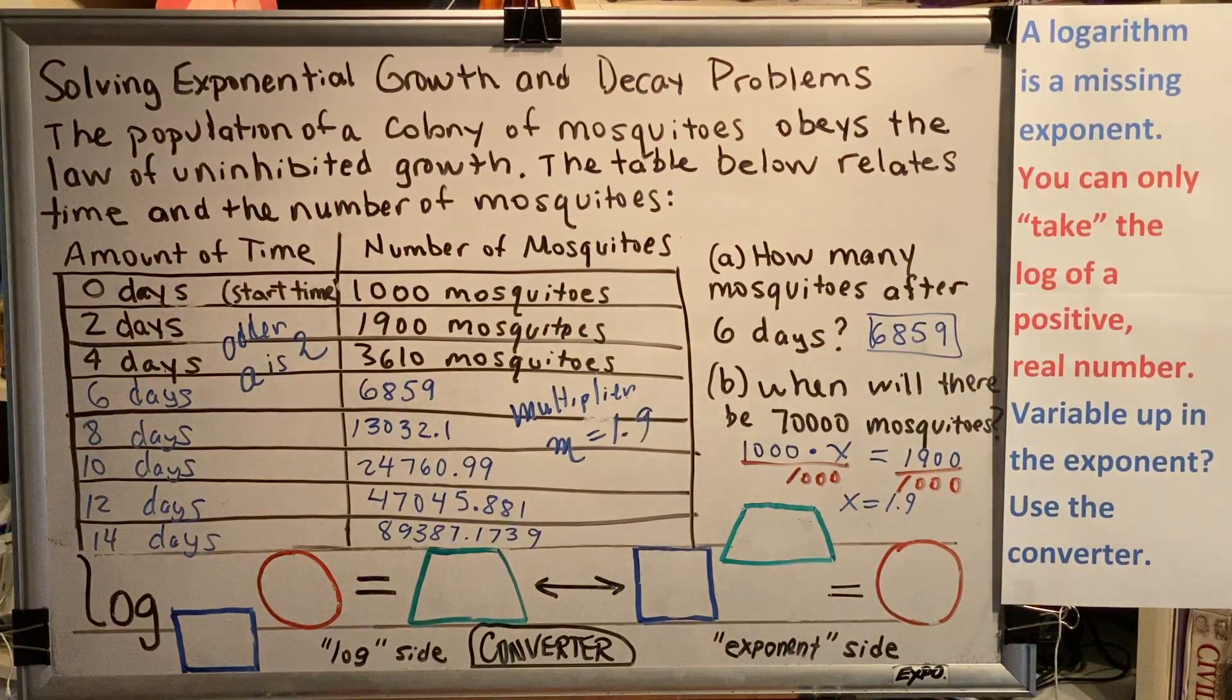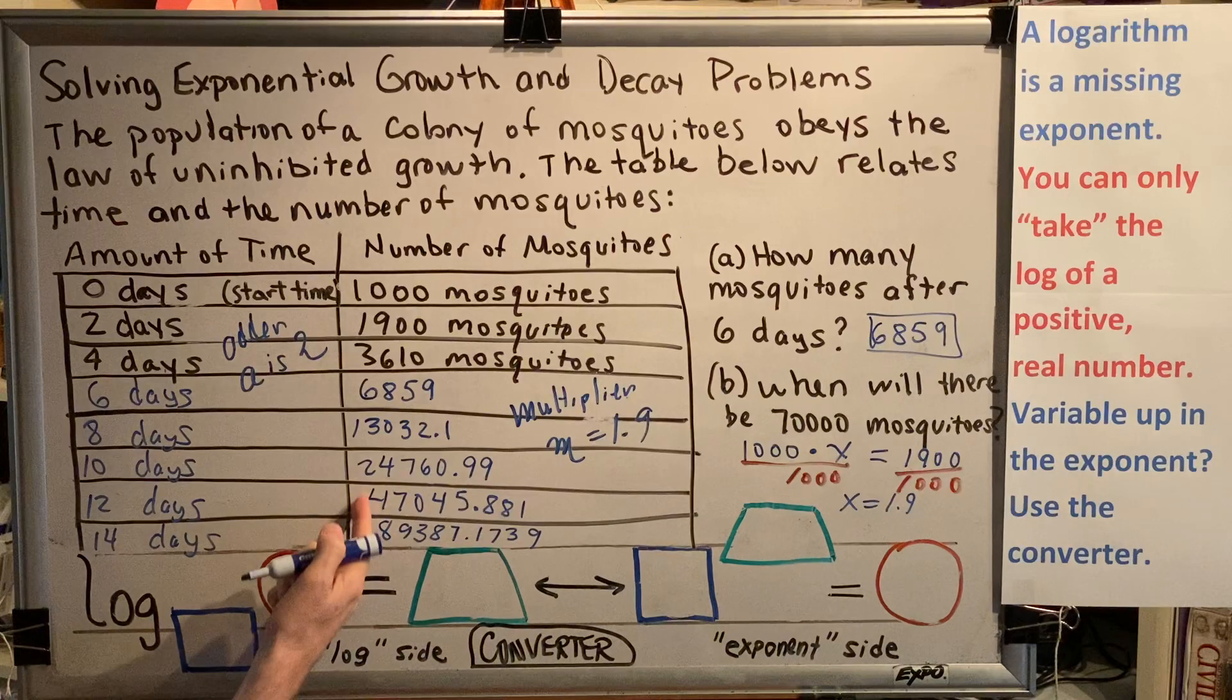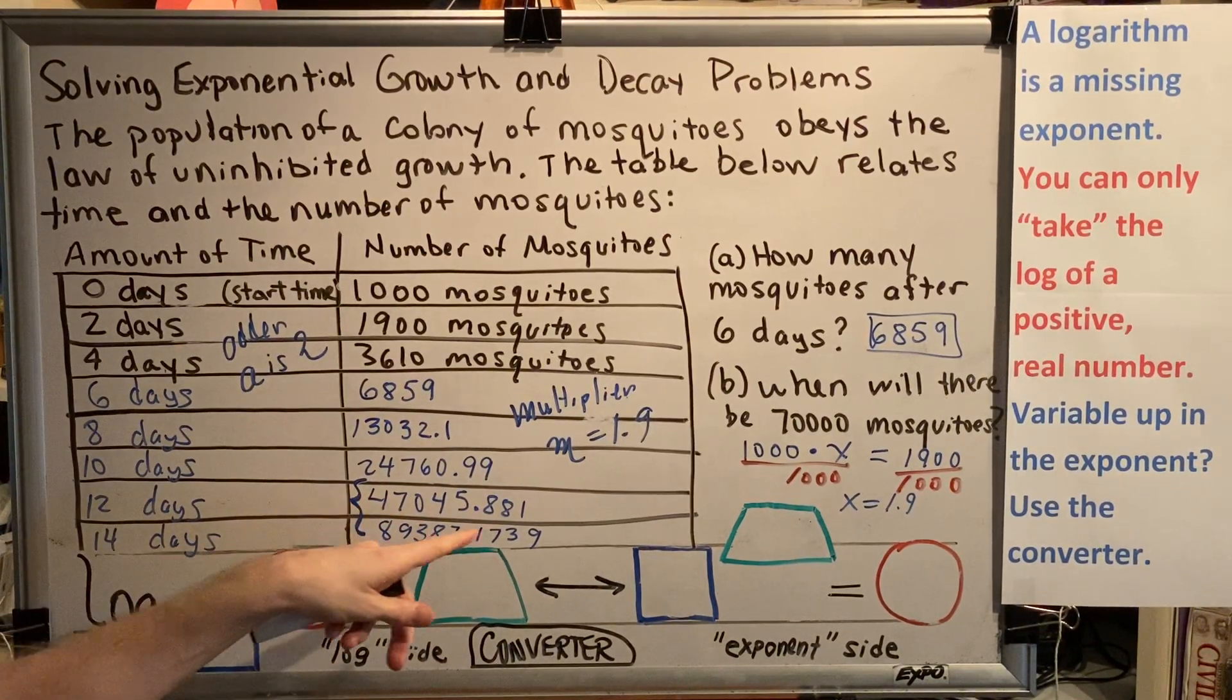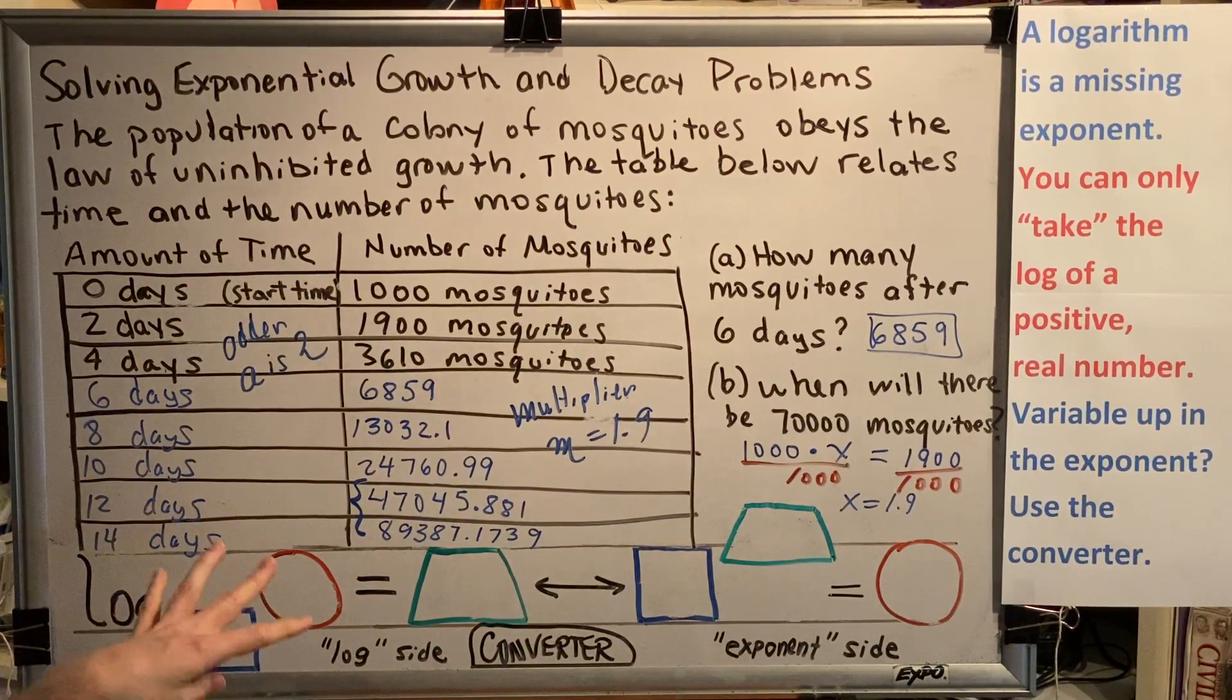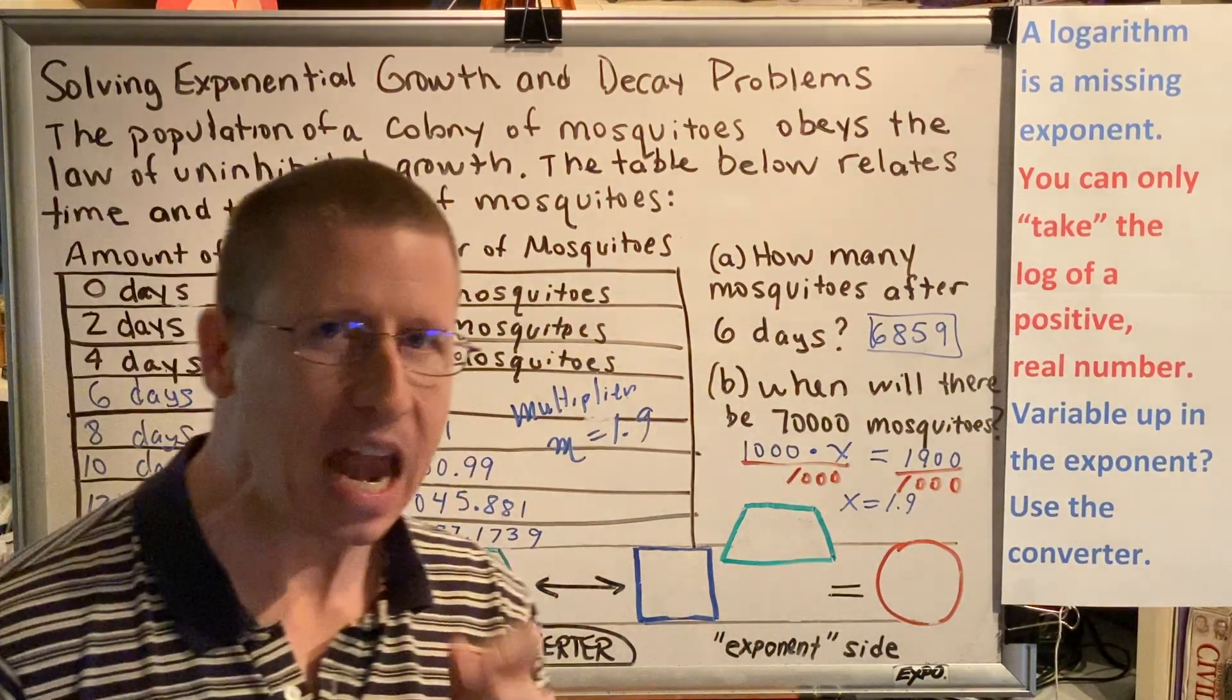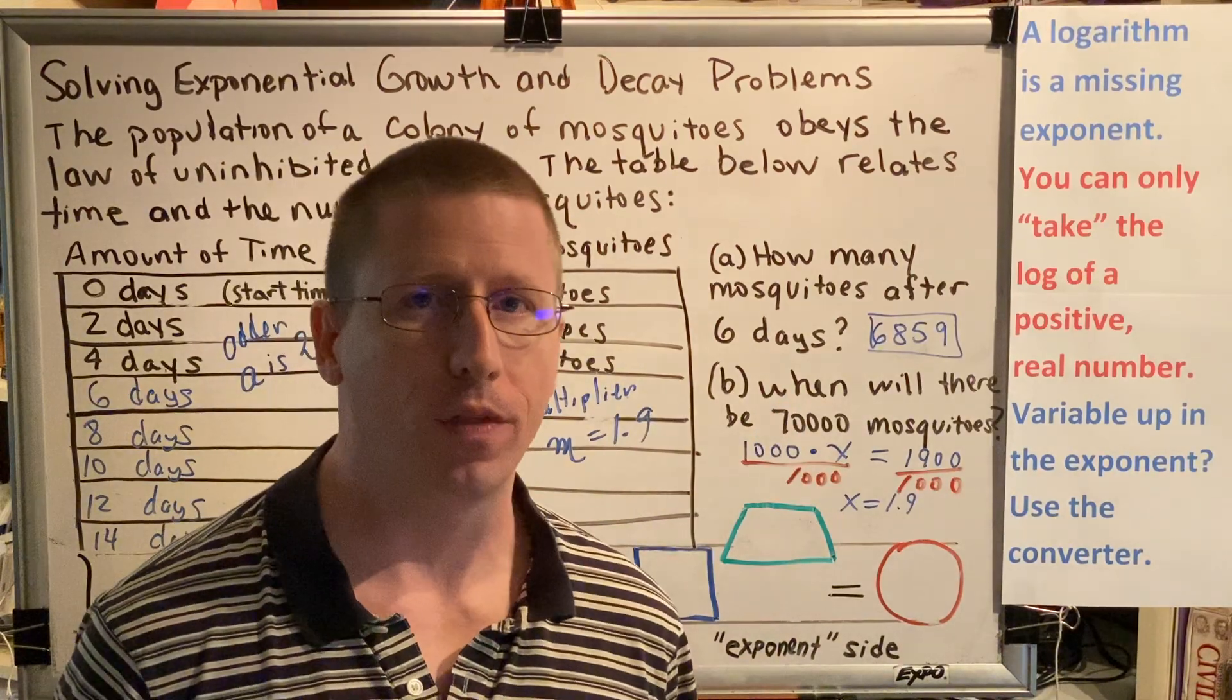Part B, when will there be 70,000 mosquitoes? Well, we look in the column for mosquitoes for the number 70,000, and we find that it's not there. 70,000 is somewhere in between 47,000 and 89,000. And for that reason, we cannot use patterns to solve this problem. We cannot use patterns to solve part B of this problem.